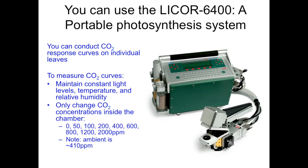Once you have all the environmental parameters set up, the only thing you want to change would be the CO2 concentration. We just need to make sure that the concentrations vary from zero all the way up to something ridiculously high, such as 2,000 parts per million. Just as a frame of reference, ambient CO2 concentration is somewhere around 410 parts per million.